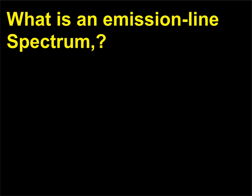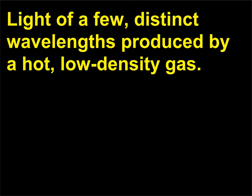What is an emission line spectrum? An emission line spectrum is light of a few distinct wavelengths produced by a hot, low-density gas.